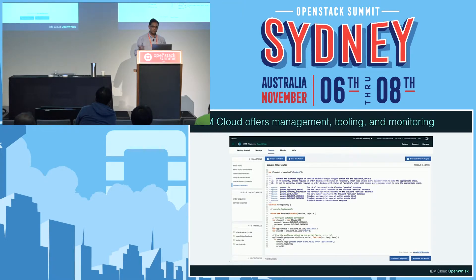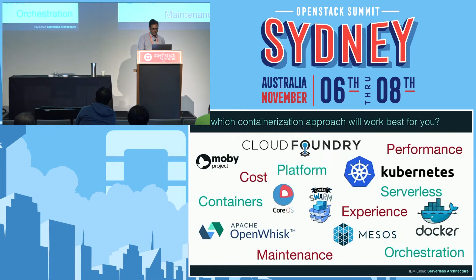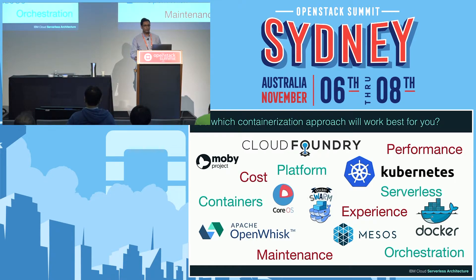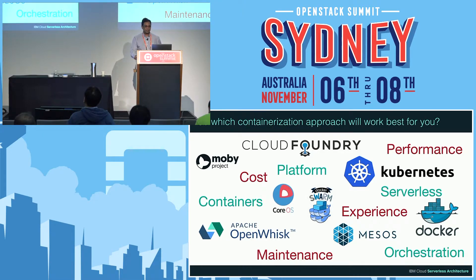Everything we say about serverless functionality is very similar to what you'll see in AWS Lambda or in Microsoft Functions. So when you're choosing a containerization approach, which one is right for you? When building an application, do you choose Kubernetes? Do you choose Cloud Foundry? Do you choose serverless? Do you choose a combination? This is really the intent of this presentation — which one do we choose and how do we know when we've picked the right one?